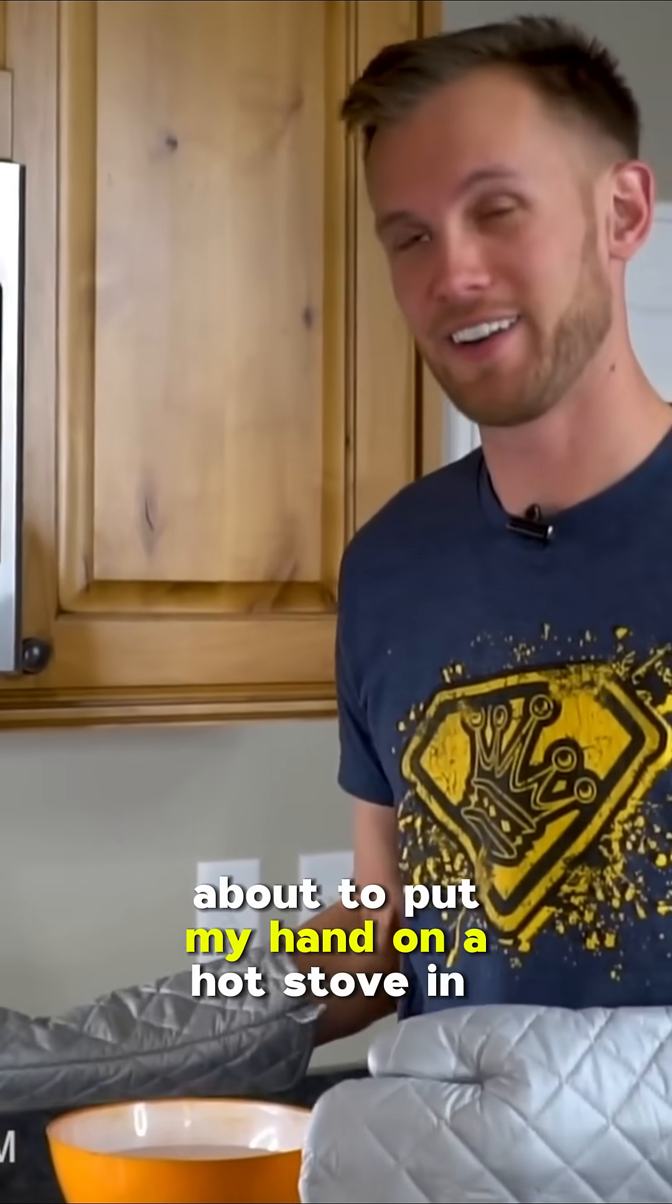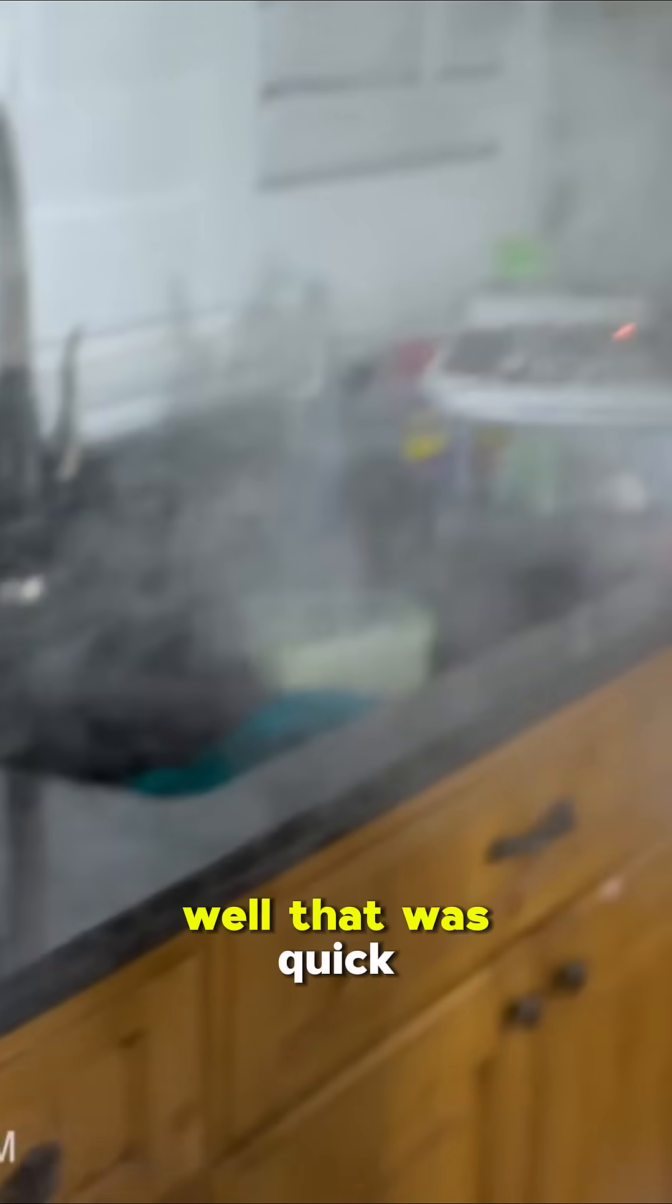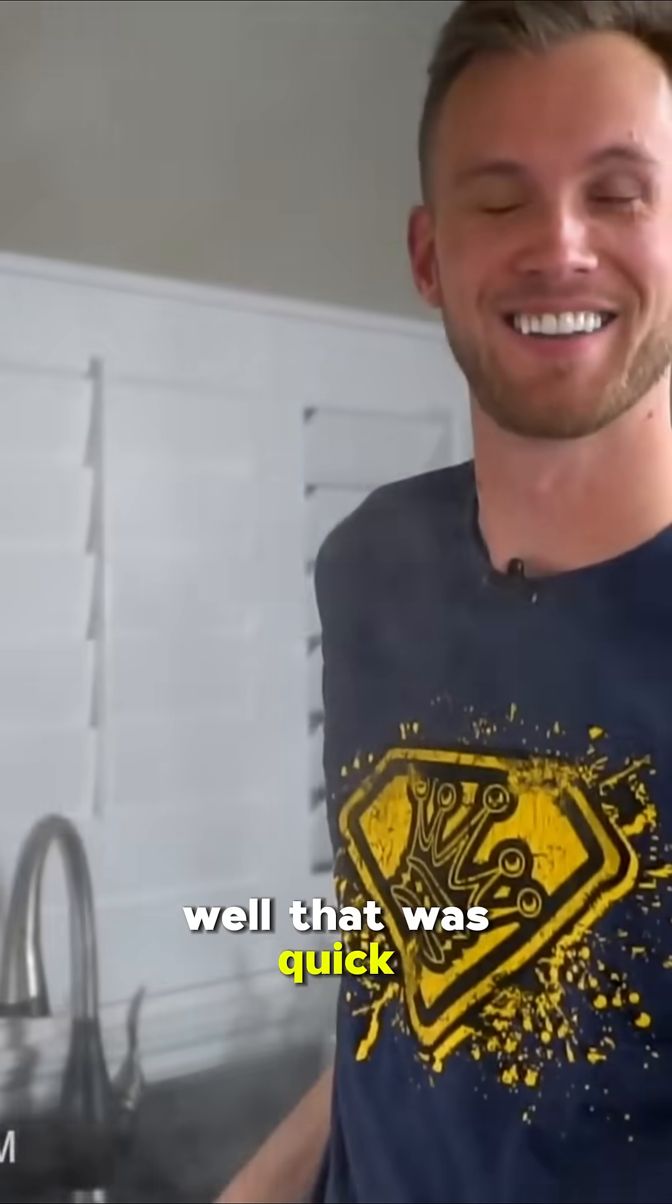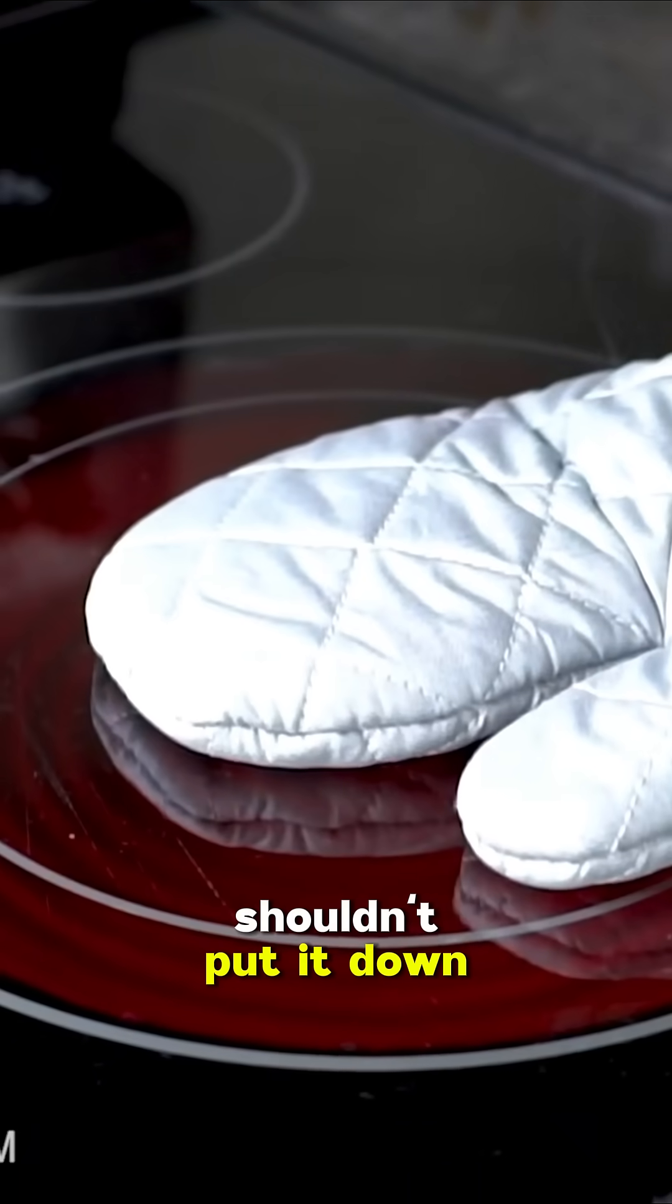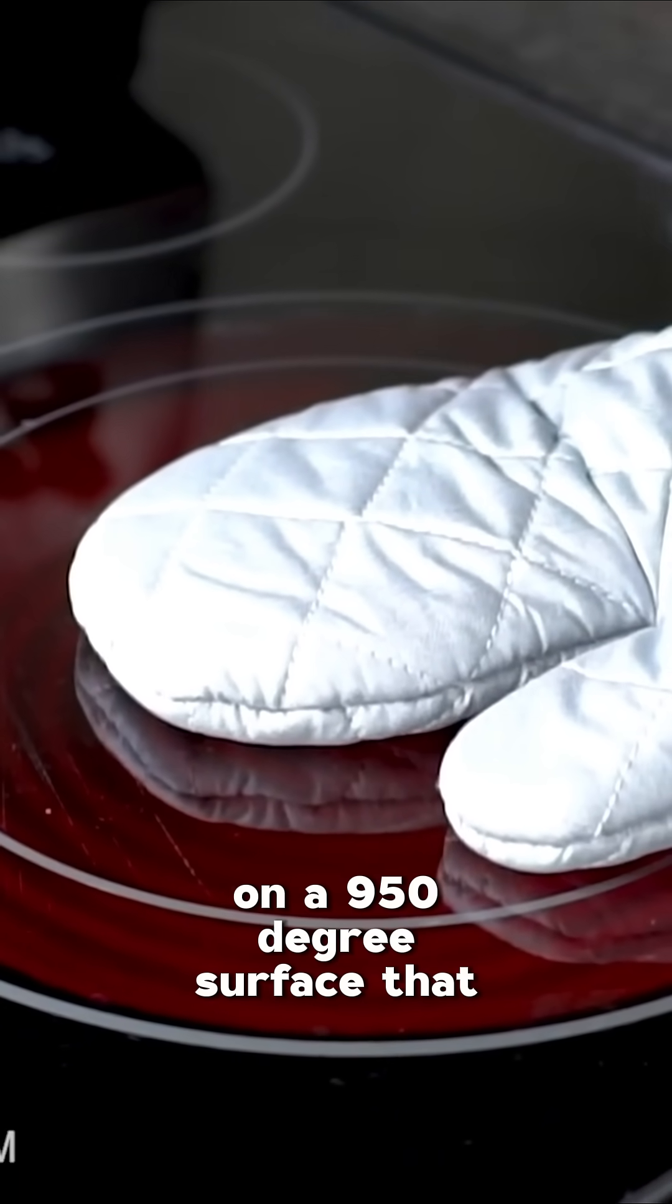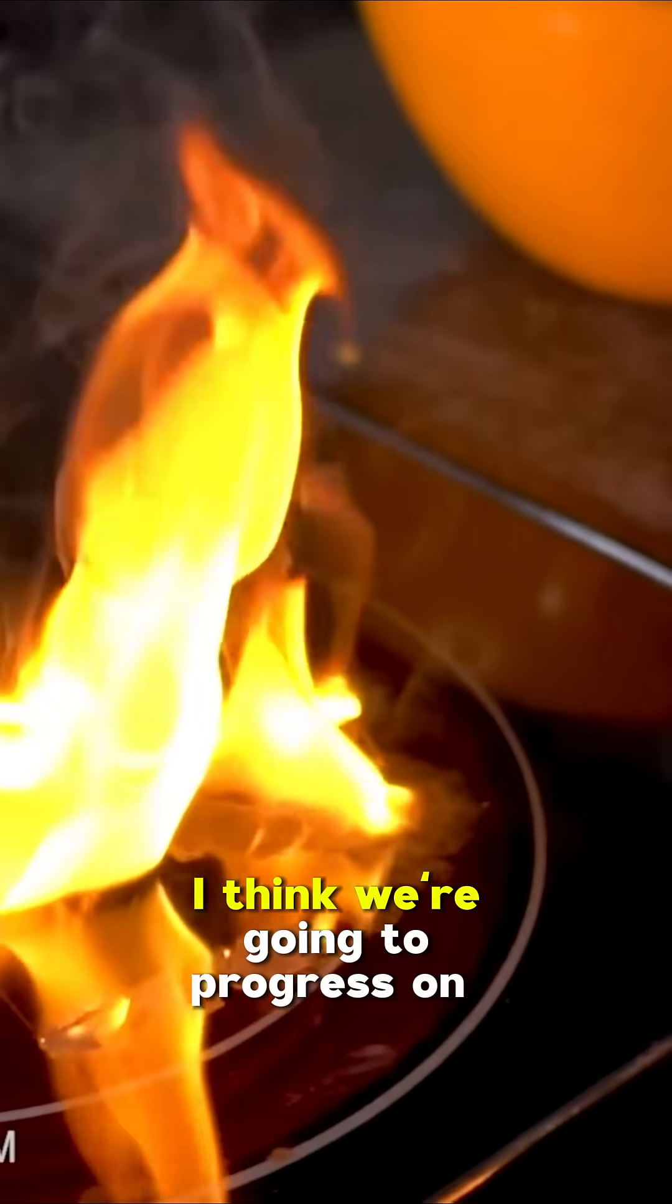About to put my hand on a hot stove in the oven mitt. Well, that was quick. So when it says it's heat-resistant up to 450, maybe 500 degrees, you probably shouldn't put it down on a 950 degree surface. That was maybe like one second, I think.